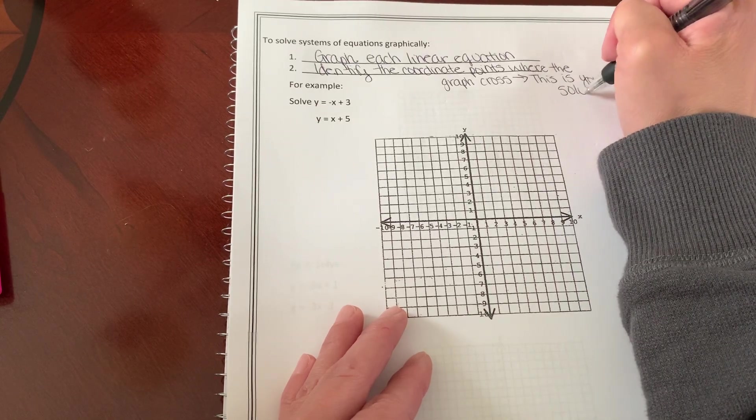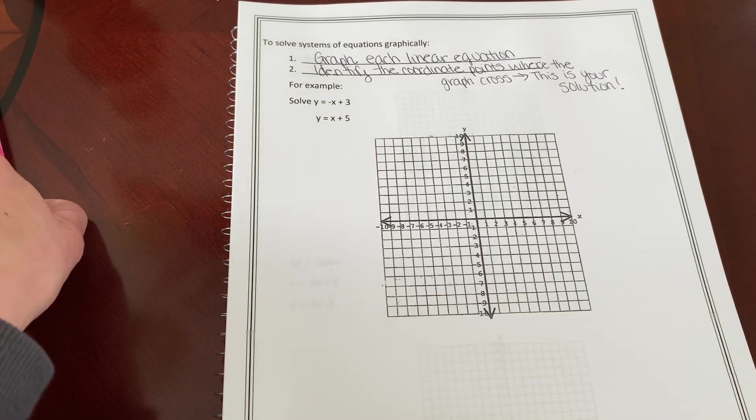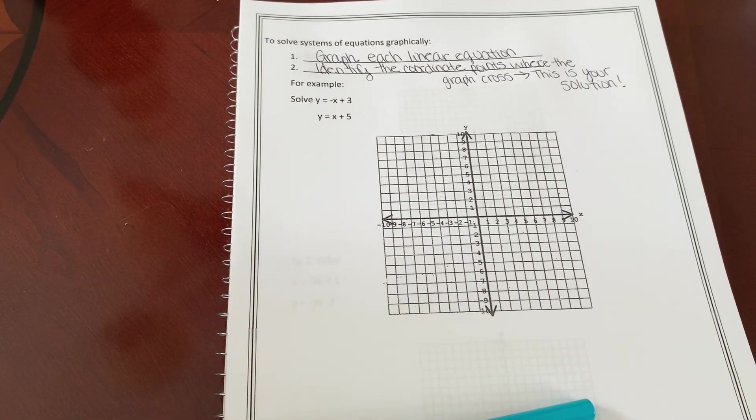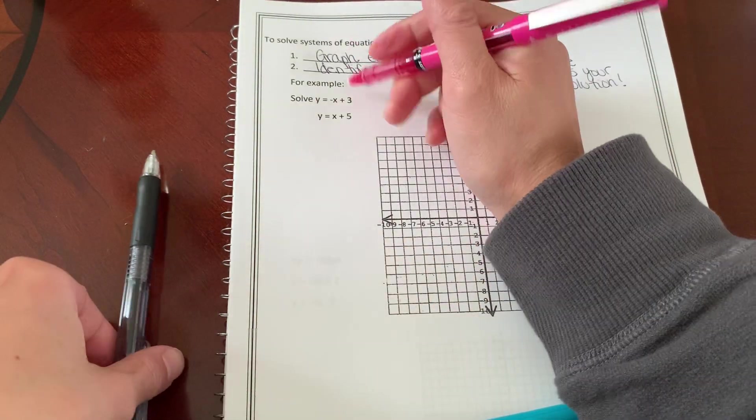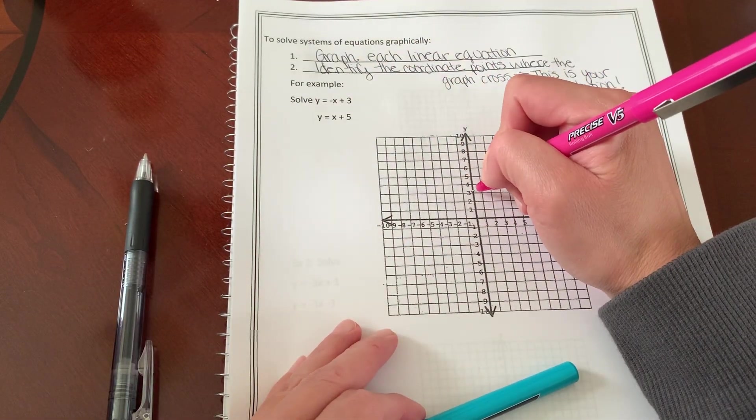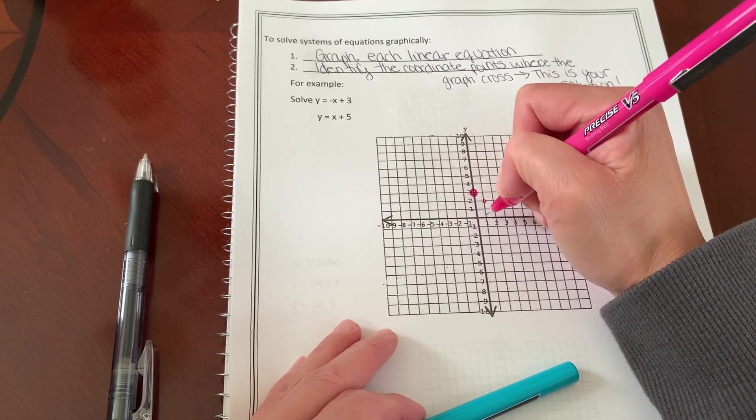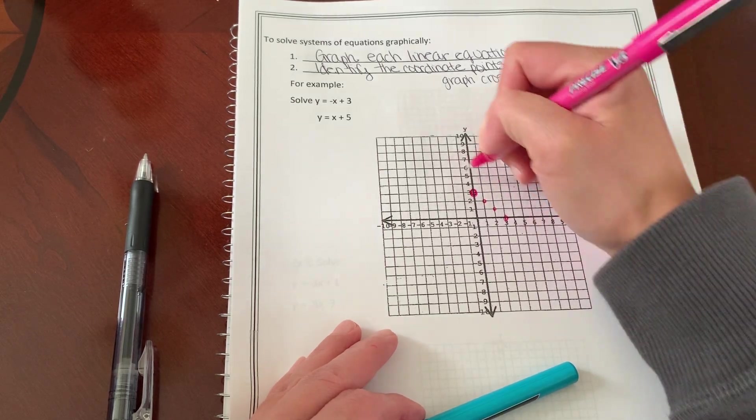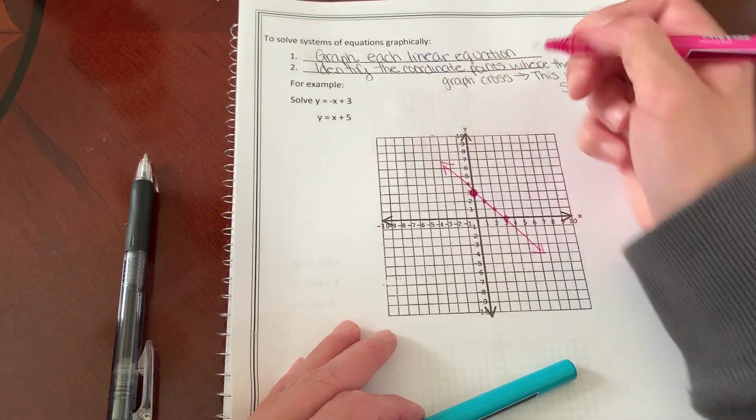My writing is too big. Okay, so let's try this. I'm going to use two different colored pens. So let's first graph the first linear equation, which is negative x plus three. So I'm going to begin at positive three, and I'm going to move down one, right one, down one, right one, down one, right one. Okay, so boom, there's going to be my first line.